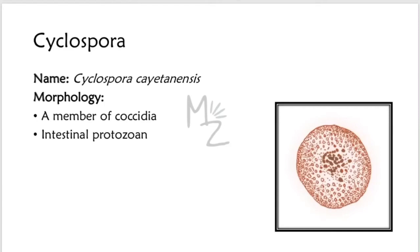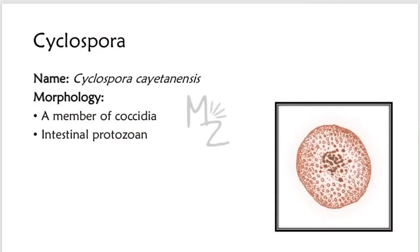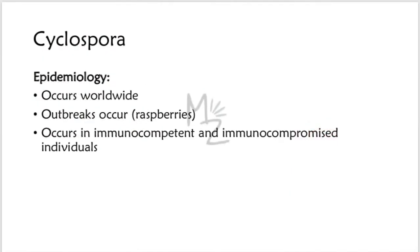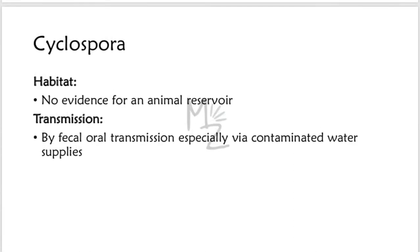Next is Cyclospora. Its full name is Cyclospora cayetanensis. It is a member of the coccidia and an intestinal protozoan. Epidemiology: This infection is caused worldwide, and one outbreak in the United States was attributed to the ingestion of contaminated raspberries. It occurs in both immunocompetent and immunocompromised individuals. There is no evidence for an animal reservoir. Transmission occurs via the fecal-oral route, especially via contaminated water supplies.